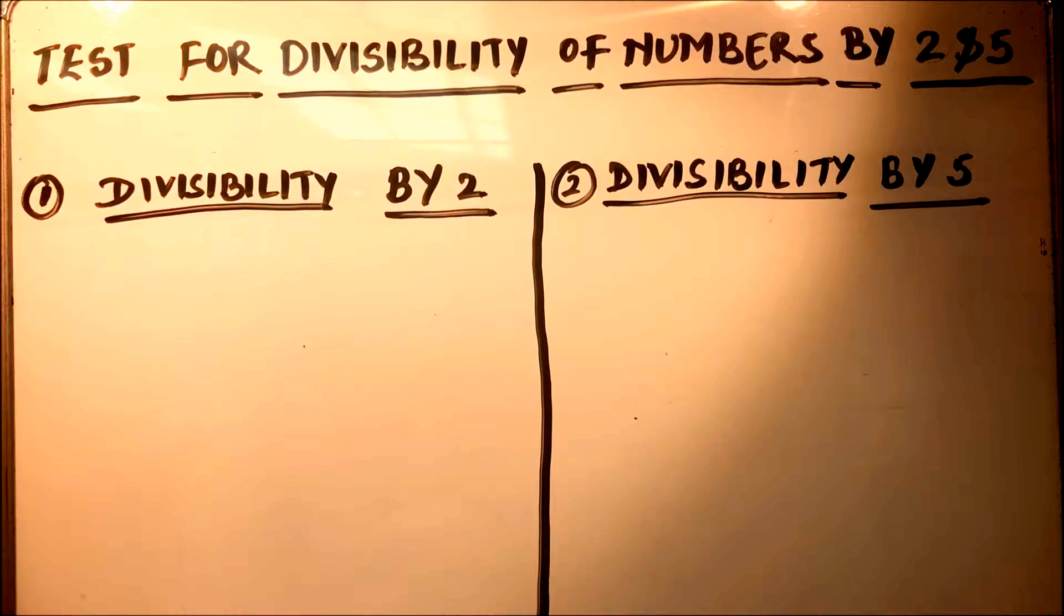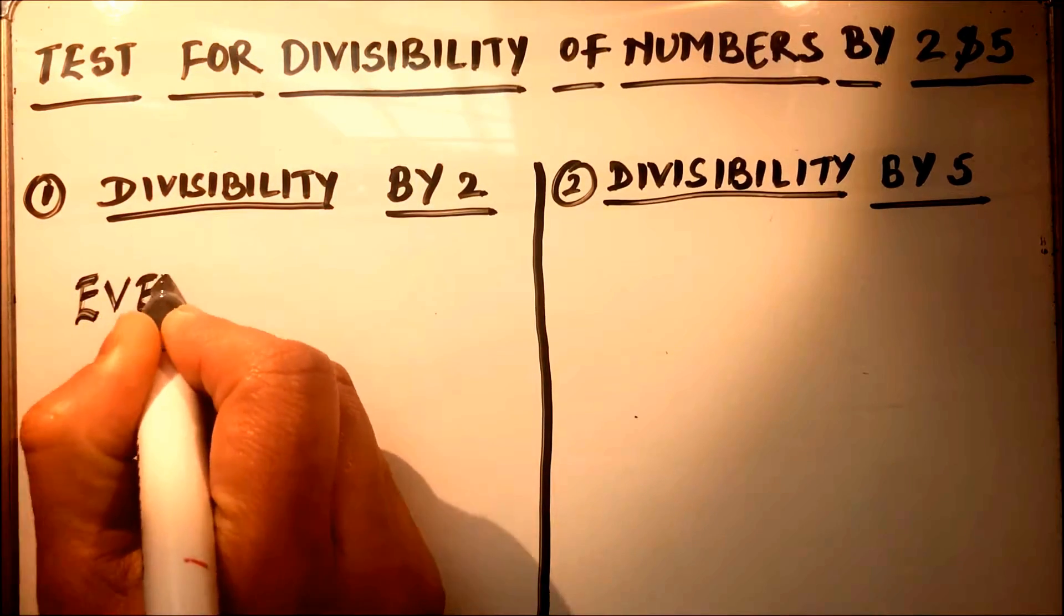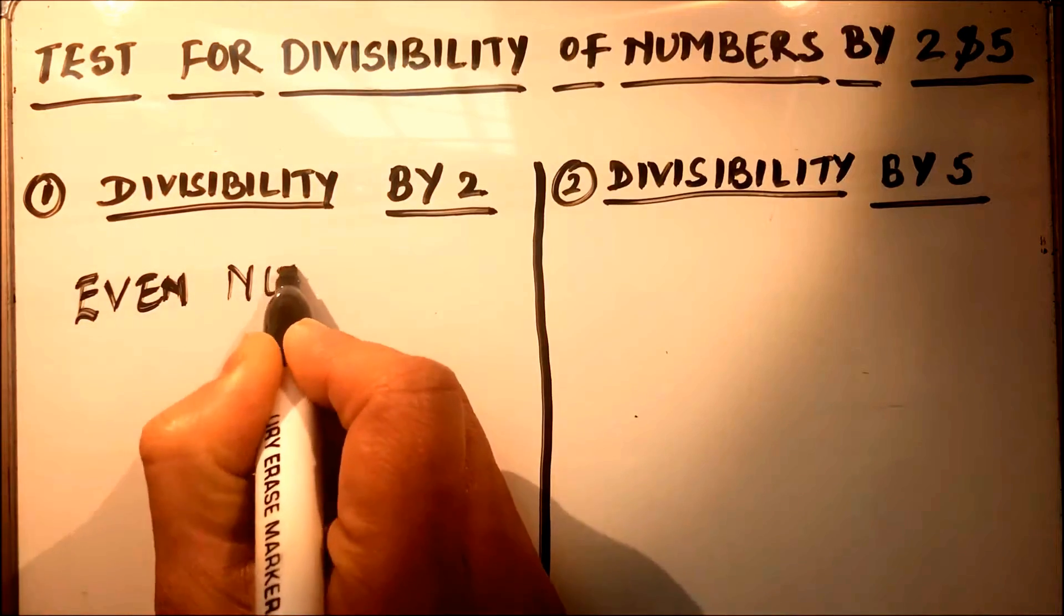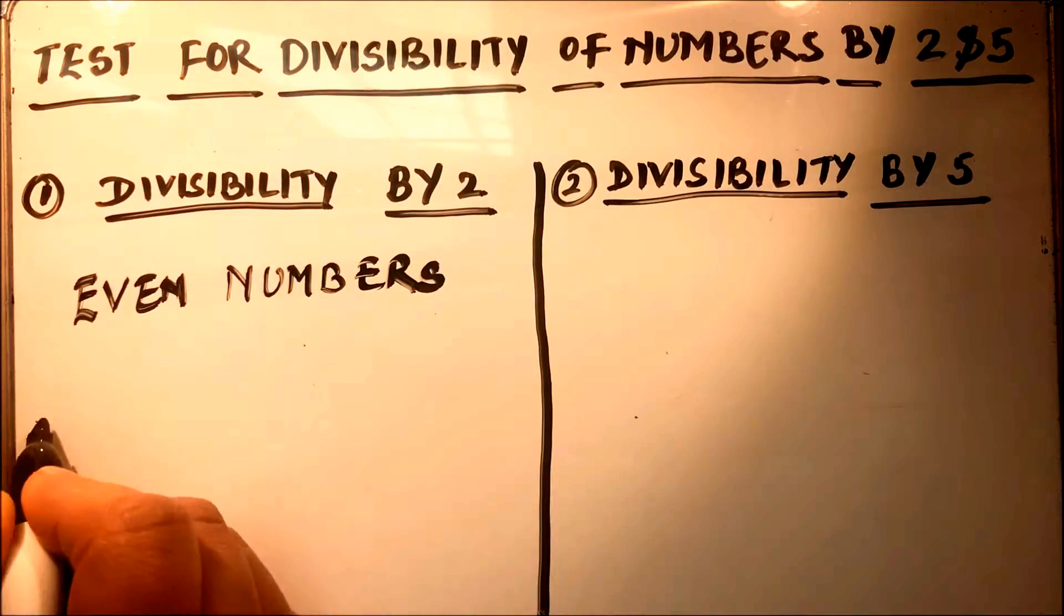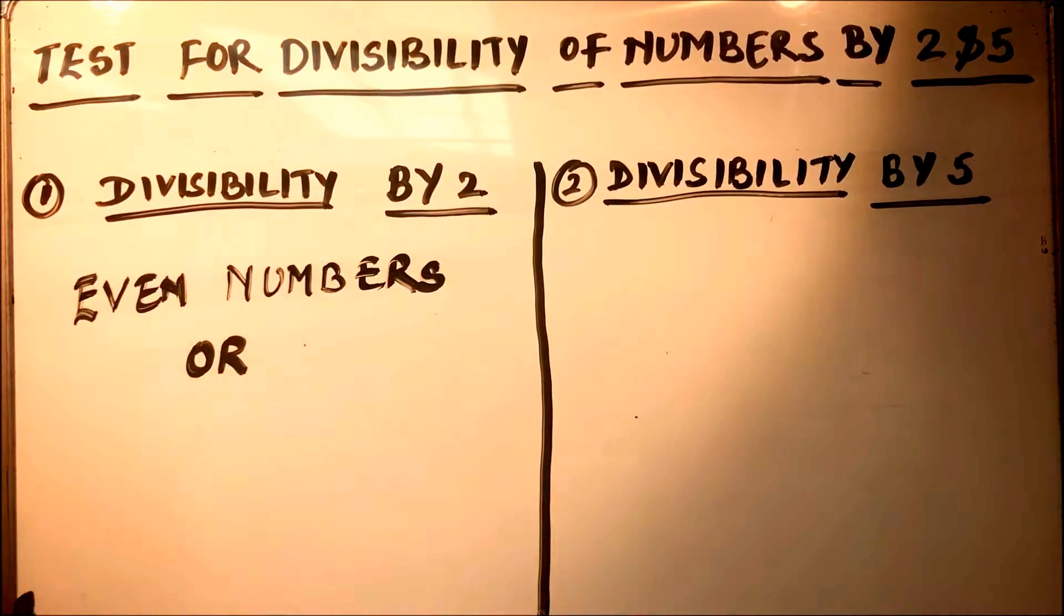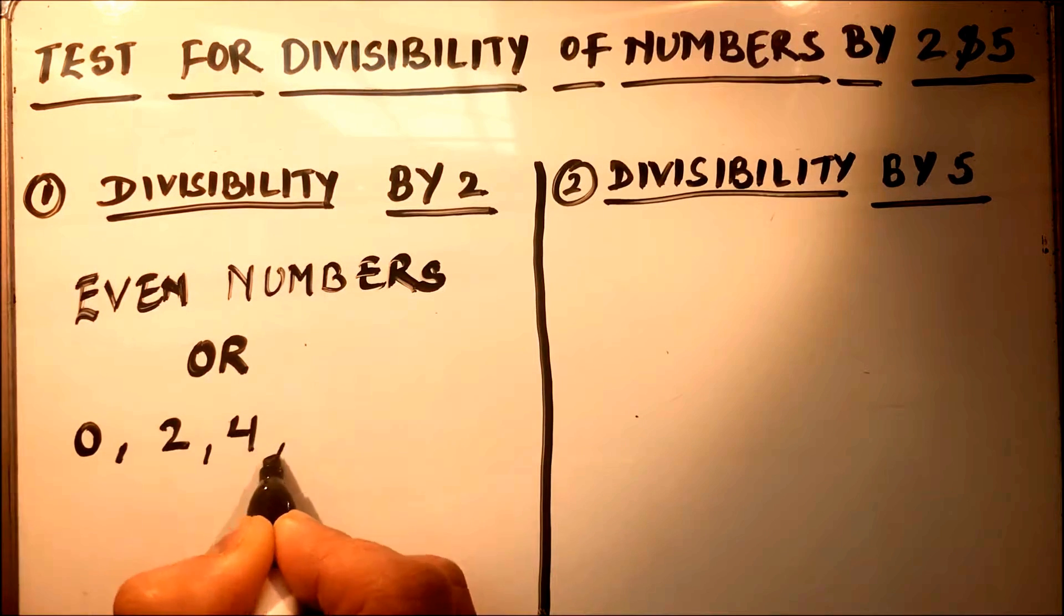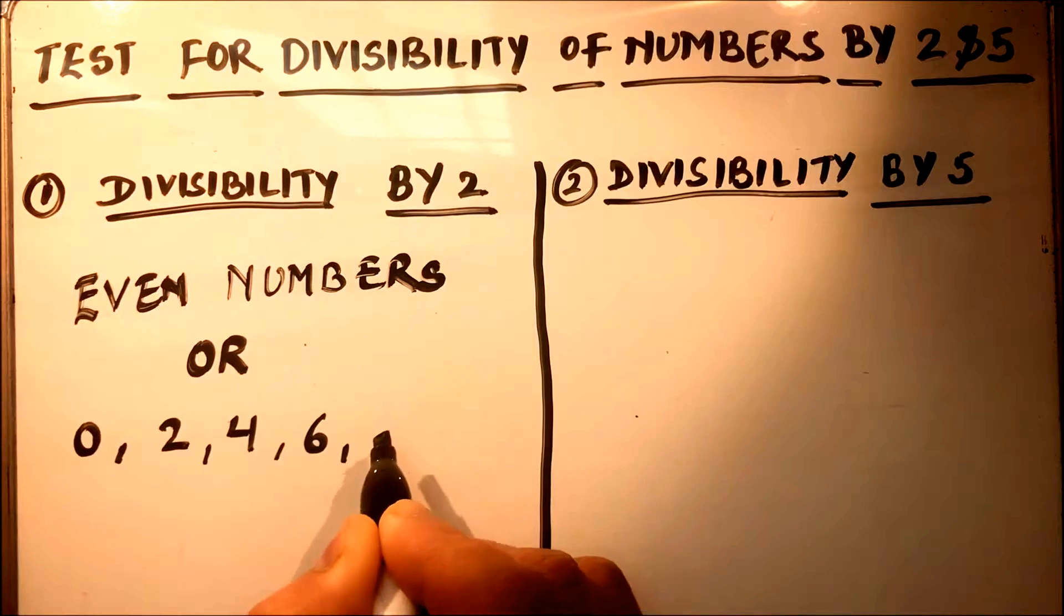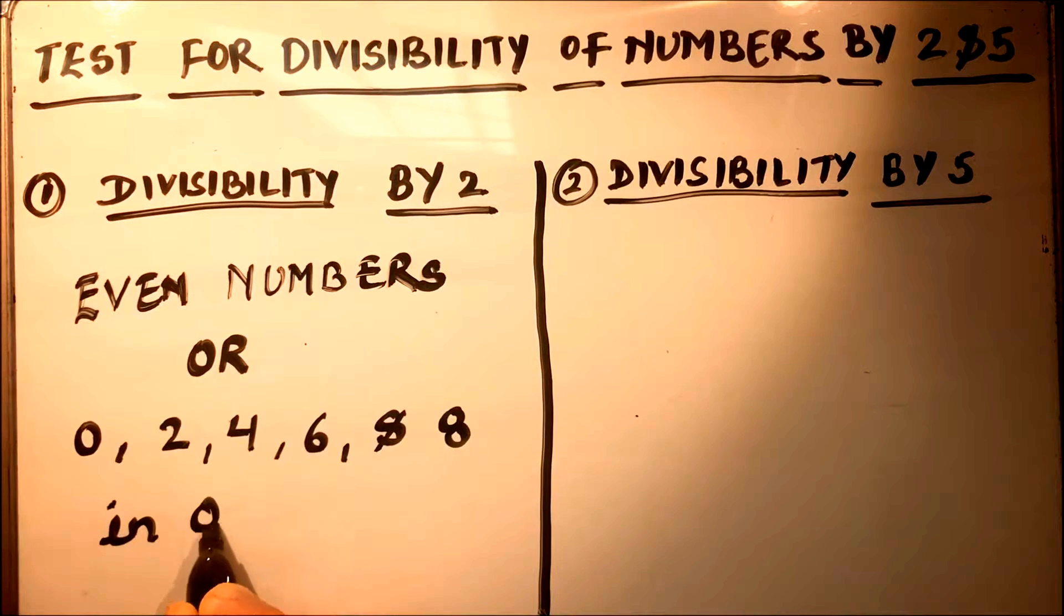Hello viewers, today we are going to learn the divisibility of numbers by 2 and by 5. First, we learn the divisibility of numbers by 2. Even numbers are divisible by 2, or you can say the numbers which have 0, 2, 4, 6, and 8 in ones place are divisible by 2.